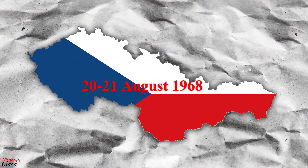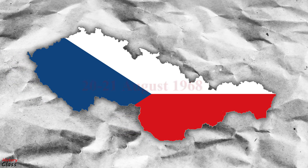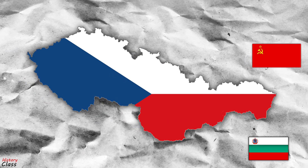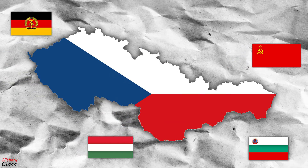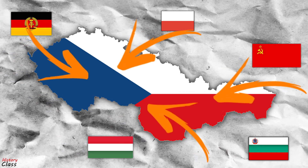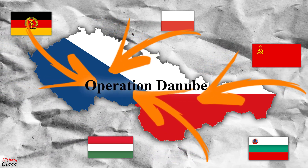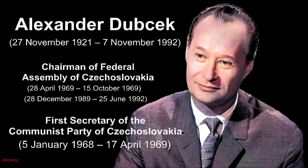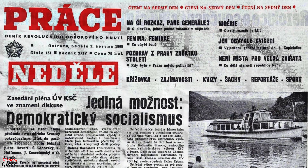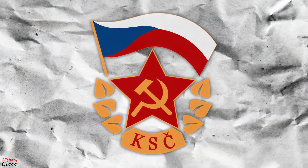On the night of 20-21 August 1968, five Warsaw Pact nations — the Soviet Union, Bulgaria, Hungary, East Germany, and Poland — invaded Czechoslovakia. Operation Danube, as the invasion was officially known, successfully stopped Dubček's Prague Spring liberalization reforms and strengthened the authority of the authoritarian wing within the Communist Party of Czechoslovakia.